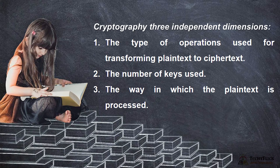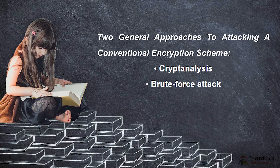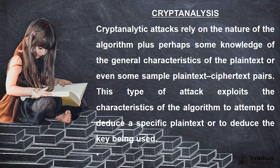In Cryptography, there are three independent dimensions: first, the type of operations used for transforming plaintext to ciphertext; second, the number of keys used; third, the way in which the plaintext is processed. Two general approaches to attacking encryption: one is cryptanalysis, and another is brute force attack.